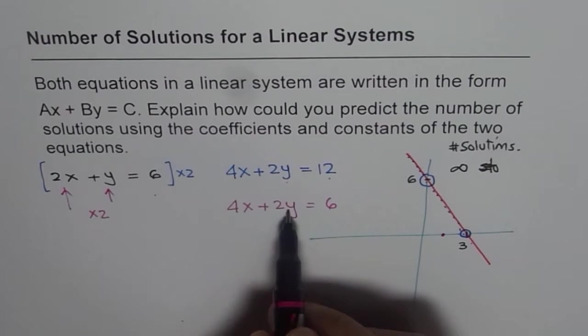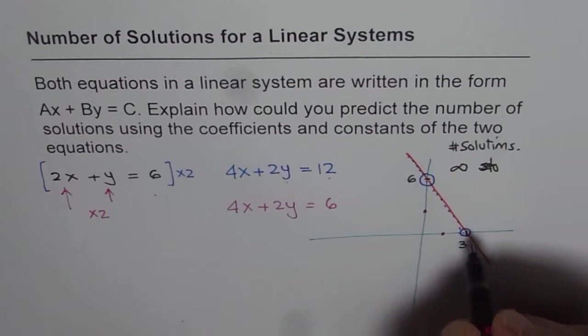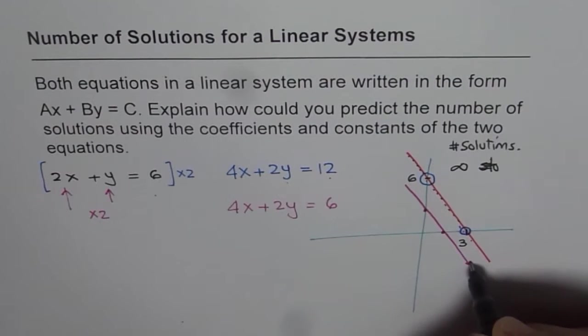As far as the Y coefficient is concerned, it will be, Y intercept will be, when X is 0, 6 divided by 2 as 3, correct? So it will be here. So this line, if I join these two points and get a line, in that case, you will find that this line is parallel to the previous line.